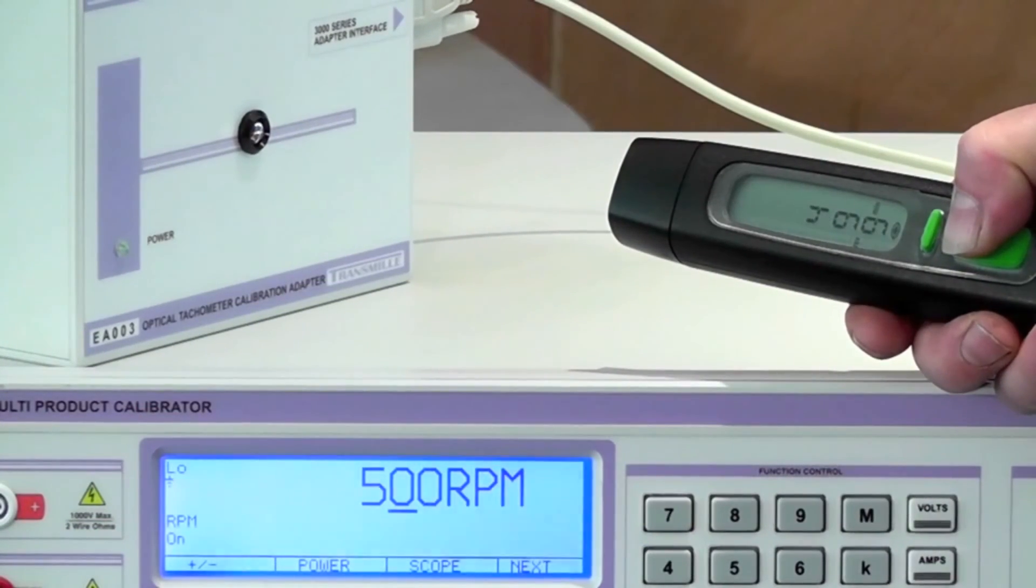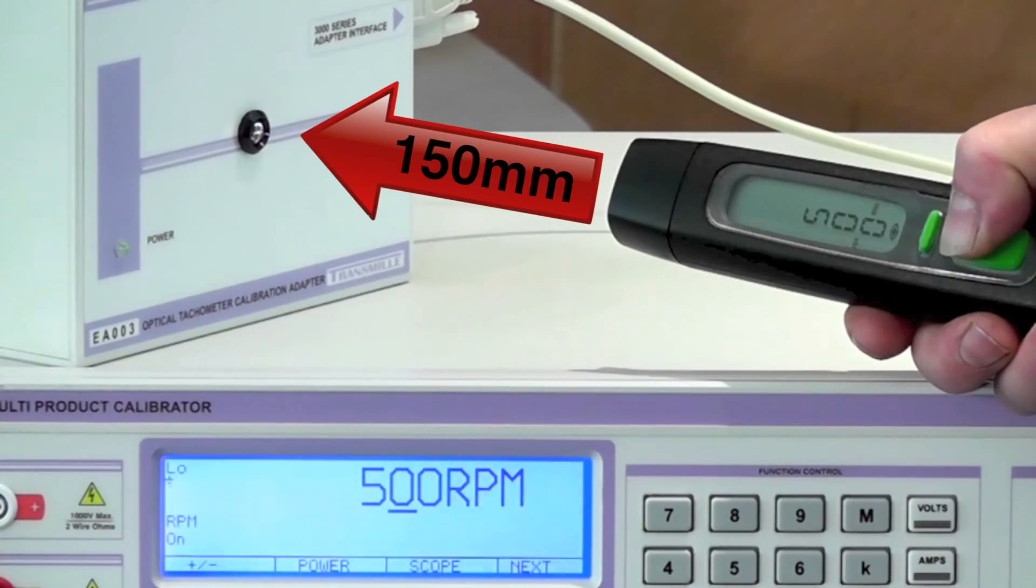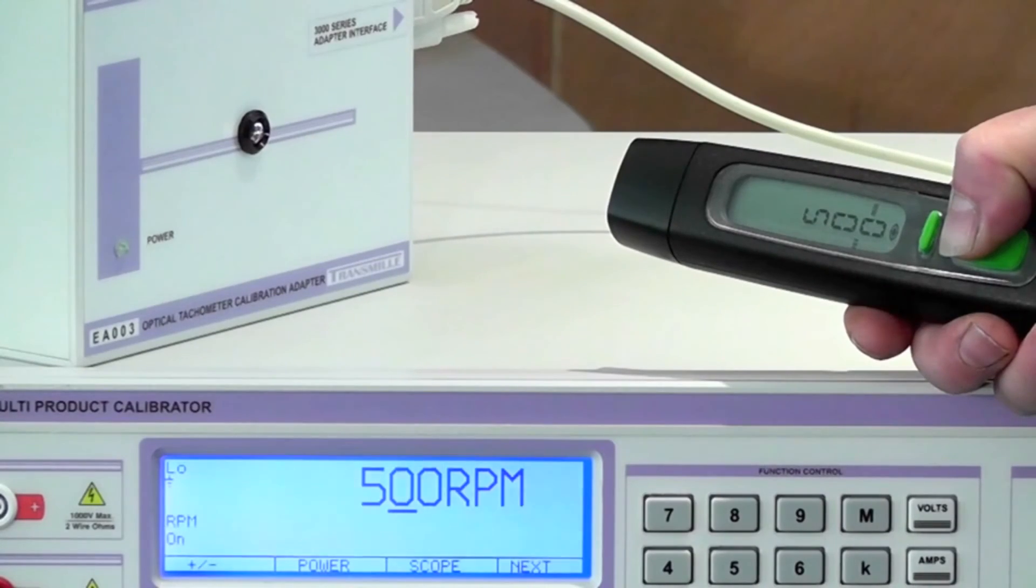To calibrate the optical tachymeter under test, aim the device at the light source approximately 150 mm away from the adapter. To ensure correct placement, check that the device on target sign is displayed.